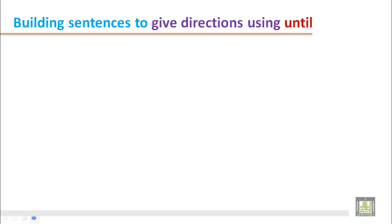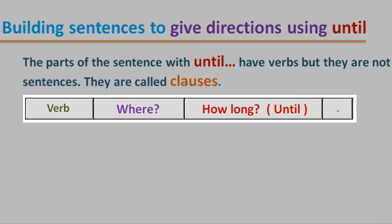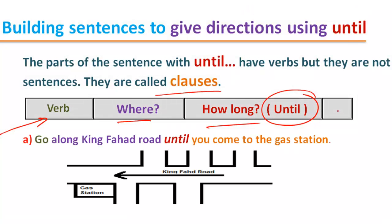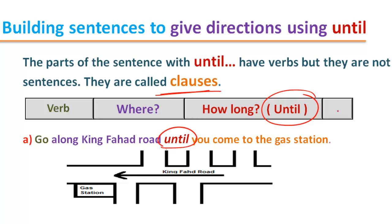Building Sentences to Give Directions using 'until.' The parts of the sentence with 'until' have verbs, but they are not sentences — they are called clauses. The structure shows: start with the verb, explain where, and then explain how long using 'until,' followed by another clause. As in example a: 'Go along King Fahad Road until you come to the gas station.' The second part starts with 'until' and has a subject and verb, but we call it a clause. In this picture, it explains that you drive until you reach the gas station.